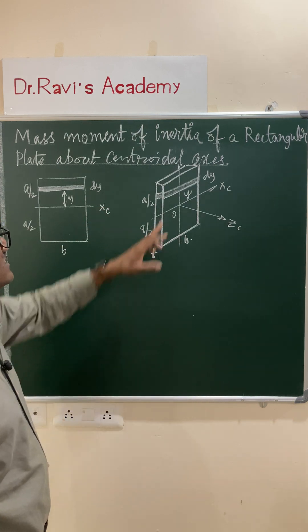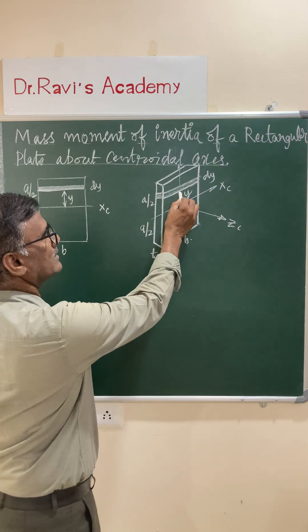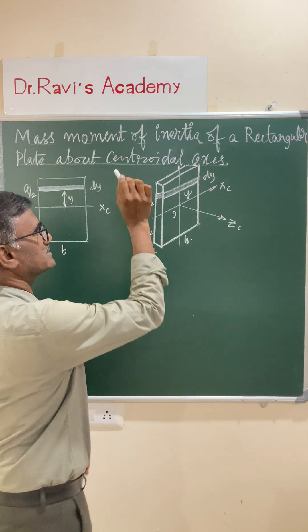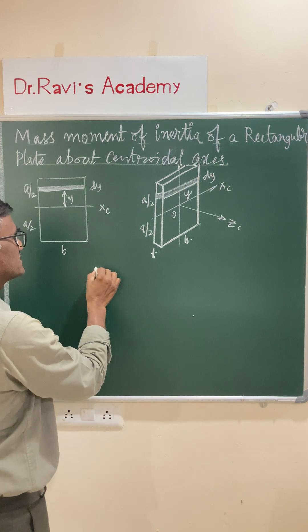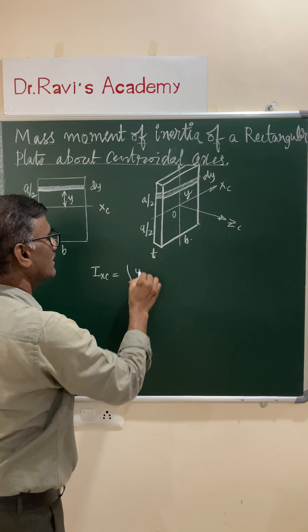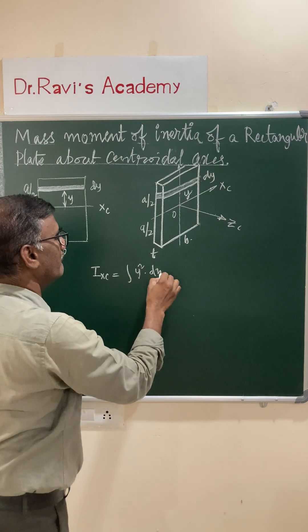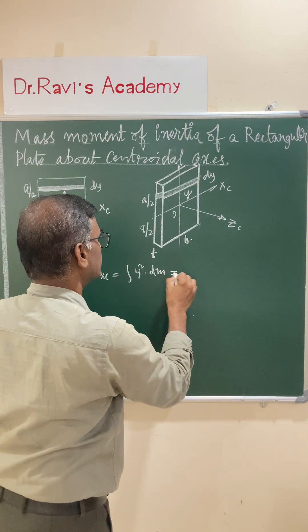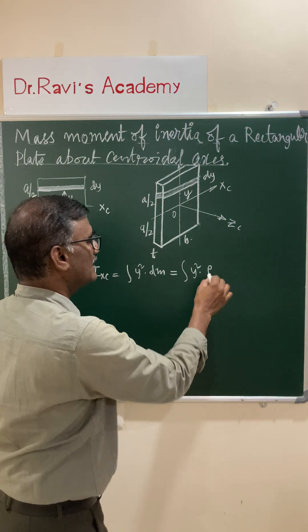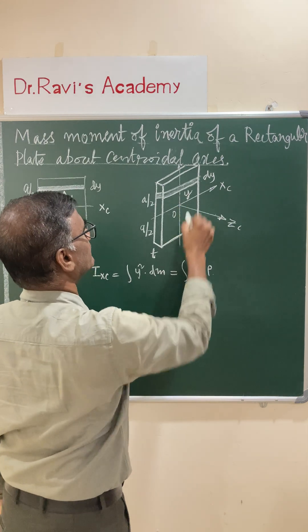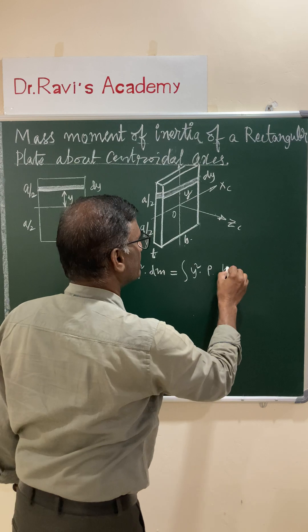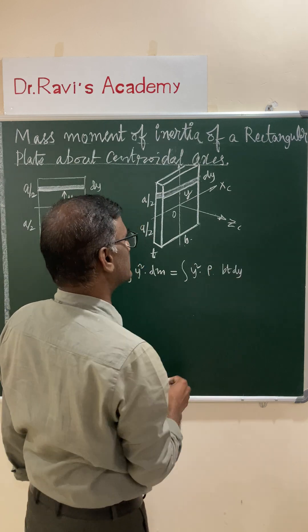Let us consider an element at a distance y from the central x-axis, with element thickness dy, and the thickness of the plate is t. The expression for Ixc — the central moment of inertia — is the integral of y² dm, where dm is the elemental mass. We replace dm with the density of the material multiplied by the volume of the element. The volume of the element is b·t·dy, so dm = ρ·b·t·dy.